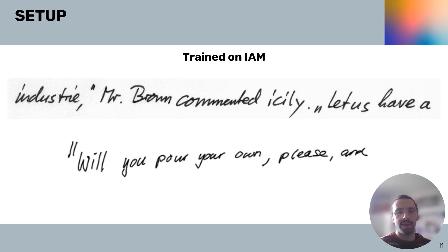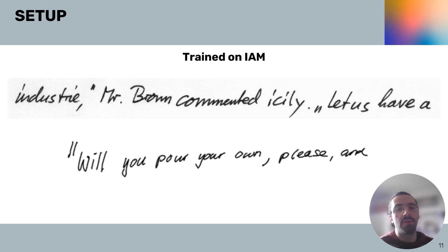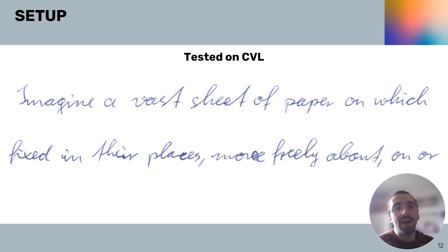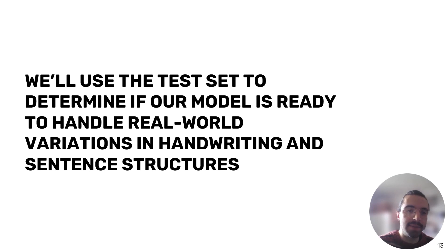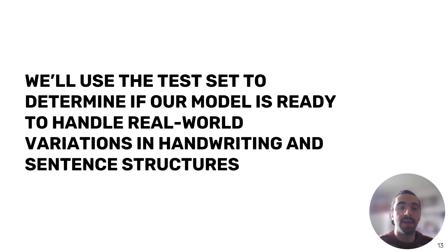Let's now move to the training and test setup. As we saw, originally the Trocker model was both trained on IAM and tested on IAM on a different set of subjects. As you can see, these are a couple of images from this dataset. But we have very good reasons to argue that the reported error rates might be too optimistic. That is why we now test the Trocker model on the CVL database. Here you can see a couple of examples from our new test set. Crucially, we're interested in the model's robustness and accuracy when it encounters data that differs from what it saw during training. By evaluating on the test set, we can determine if our model is ready to handle real-world scenarios with variations in handwriting and sentence structures.